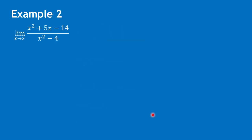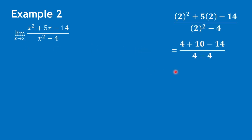For example 2, the given is x squared plus 5x minus 14 all over x squared minus 4 as x approaches 2. Let us show that this is really an indeterminate form by substituting 2 for x. We would have 4 plus 10 minus 14 over 0, giving us 0 over 0.